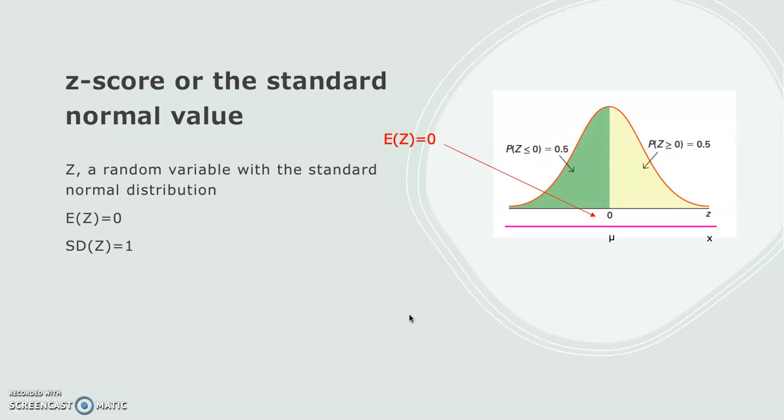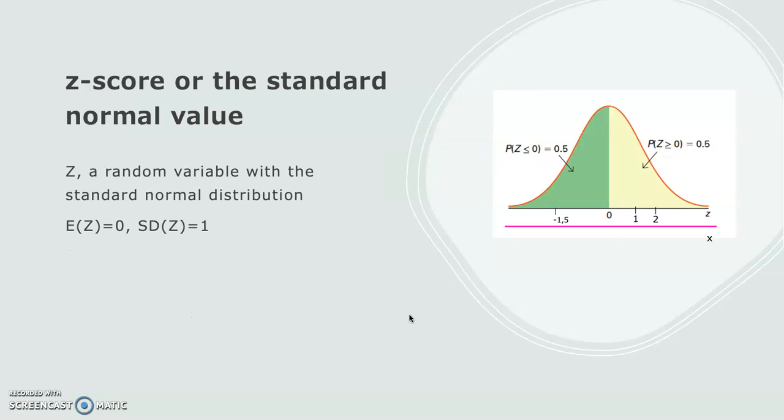This means that the z value measures the number of standard deviations a given value is away from the mean. So let's take an example: we have the mean μ = 18 and standard deviation σ = 2. When x equals the mean (18), the z value is equal to zero.